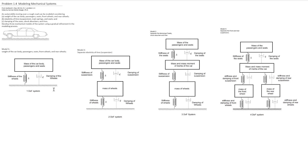In modeling a system, we always start with the simplest model and then compare our solution to the real behavior of our system, and then start complicating our system or adding elements to see which one will behave like our real system.